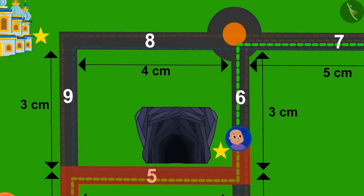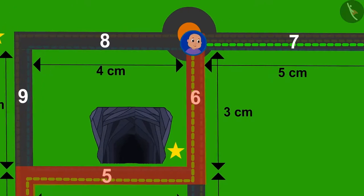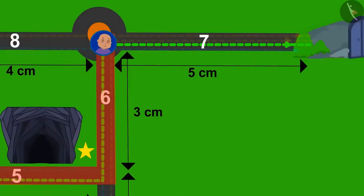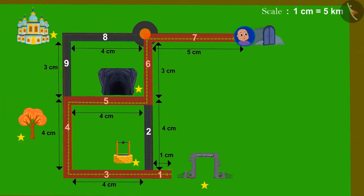Bablu ran fast and crossed road number 6. Now, which road will he take after turning right? Road number 7. Bablu crossed road number 7 from the spot and reached the exit gate.